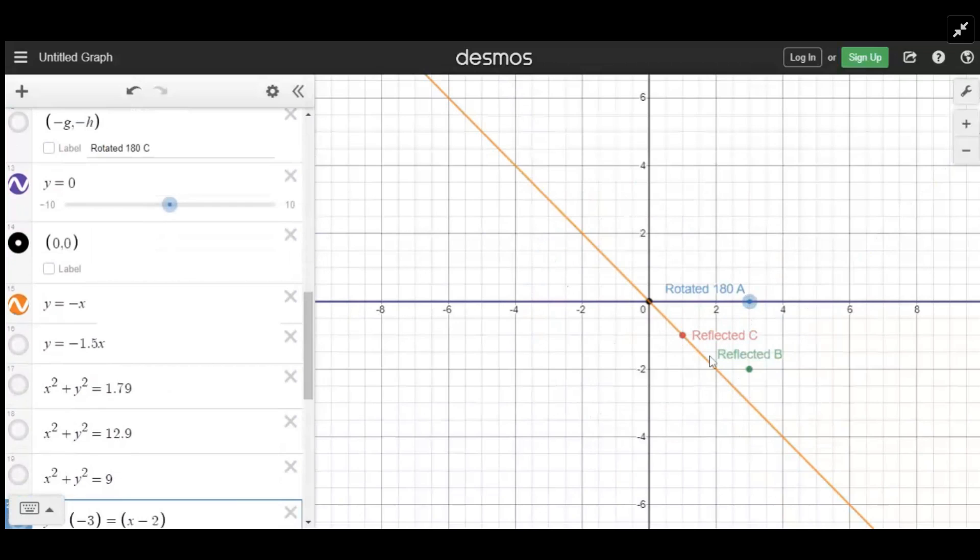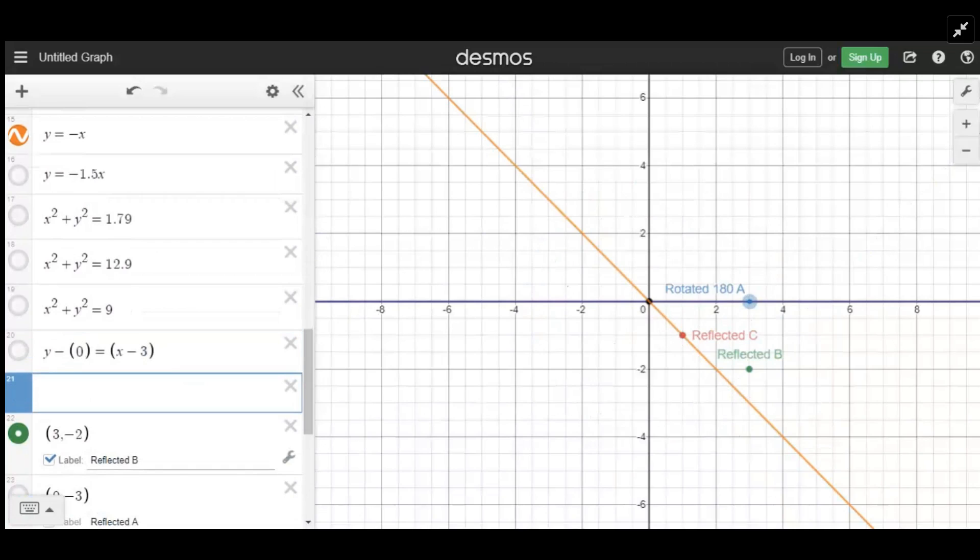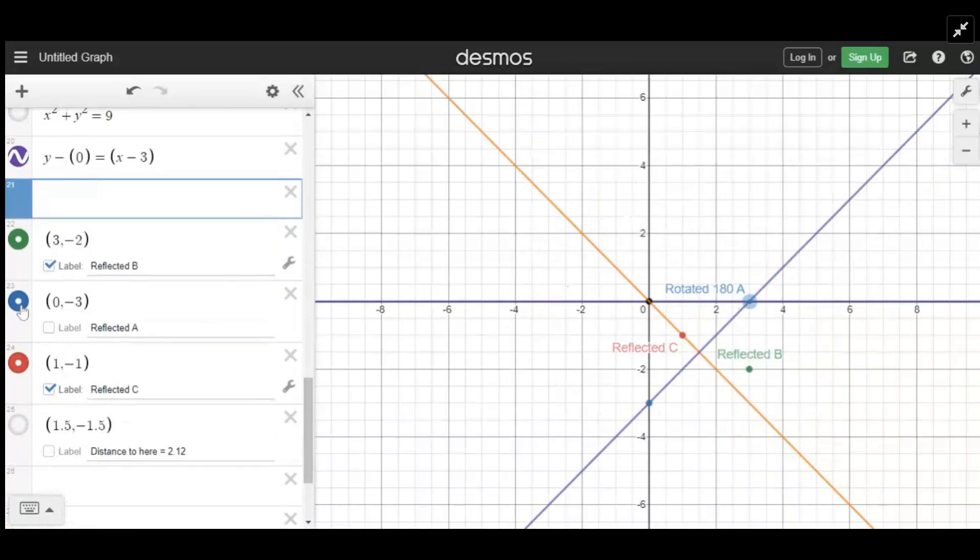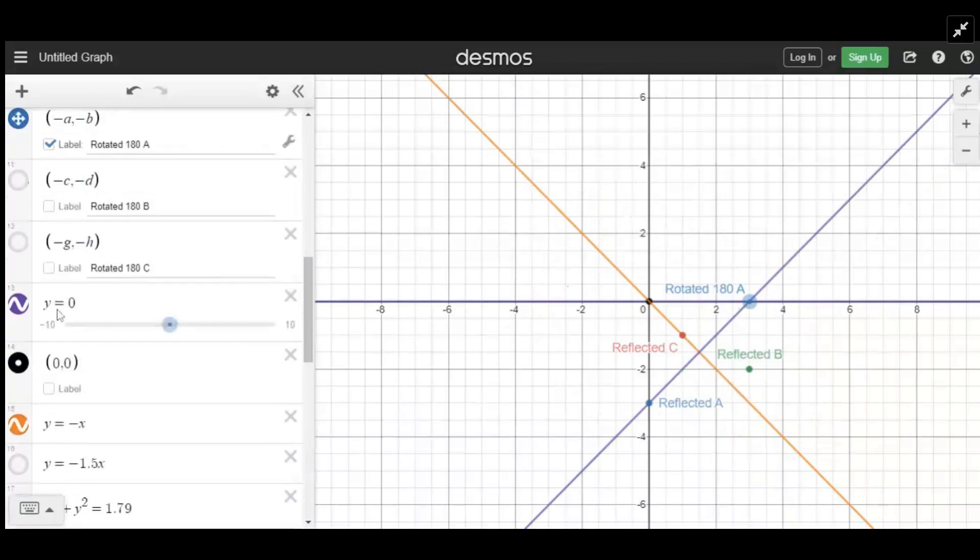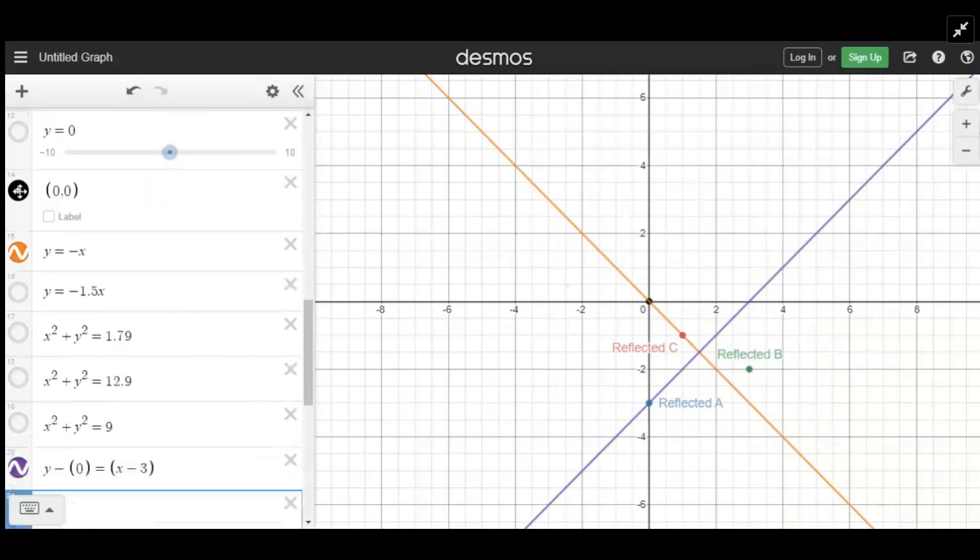And whatever distance we went from here to here perpendicular, we go the same distance over here. So this point is at three, zero. Notice it's perpendicular to the line y equals negative x. And it is this certain distance, and if we go the same distance, we land right there at zero, negative three. So here is our reflected A. Notice it's the same distance from the yellow line.